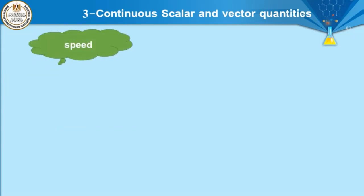In the previous part of this lesson, we talked about two types of physical quantities. We know that a physical quantity is the quantity that can be measured. Physical quantities can be classified into two types: scalar and vector. Scalar physical quantity is defined by its magnitude and has no direction — as distance, time, and mass. While vector physical quantities are defined by magnitude and have direction.